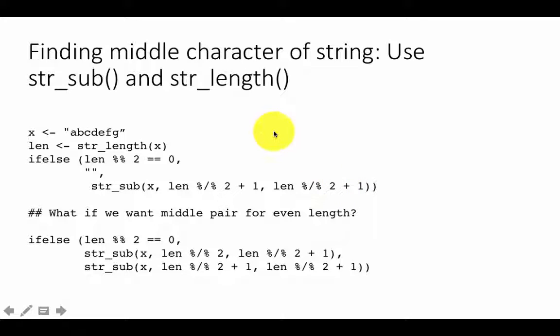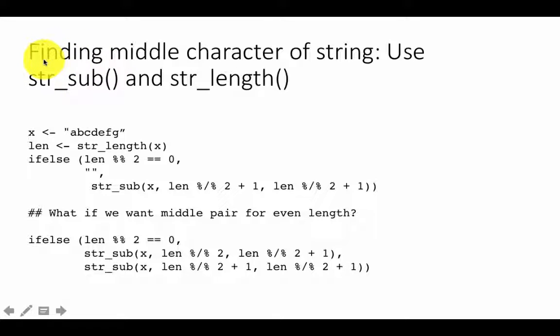Suppose you want to find the middle character of a string of any length — it could be 1, 10, 15, and so on, odd or even. To find the middle character, we need to use str_sub to find a substring. But we also need to know the length of the string so we can compute which position is the middle character.